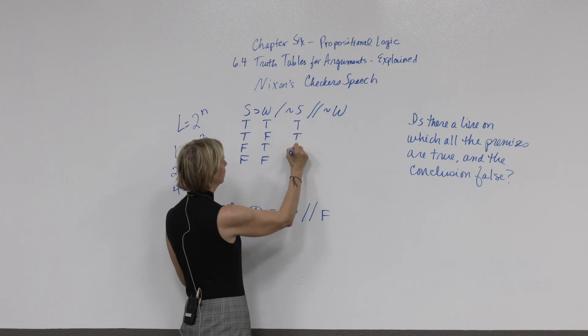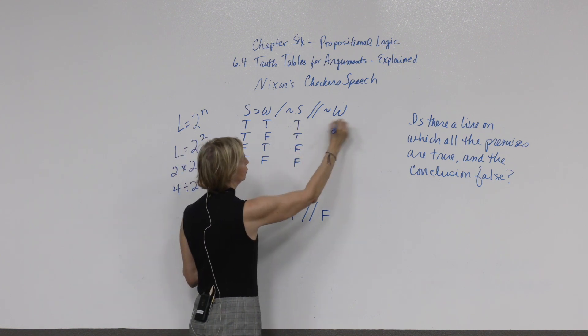And we're going to start the same way. The four lines, we're going to divide in half. 4 divided by 2 equals 2. So, under the first distinct letter, we will have 2 true and 2 false. We go to the next different letter, and we divide 2 in half. 2 divided by 2 is 1. So, the W is going to be true, false, true, false.